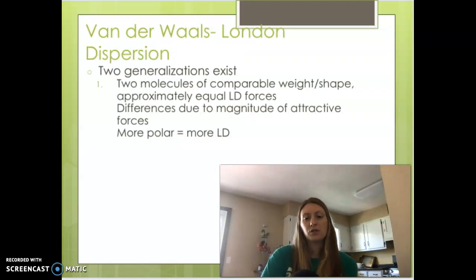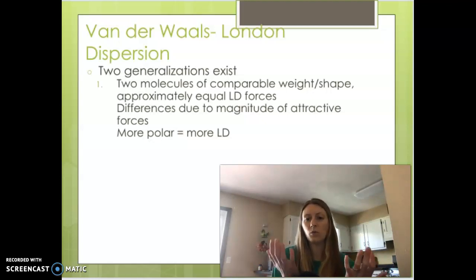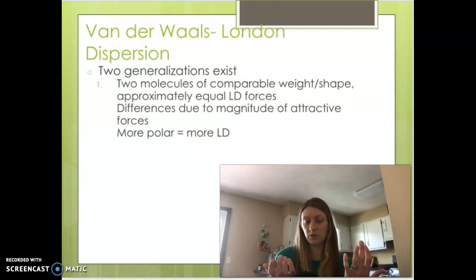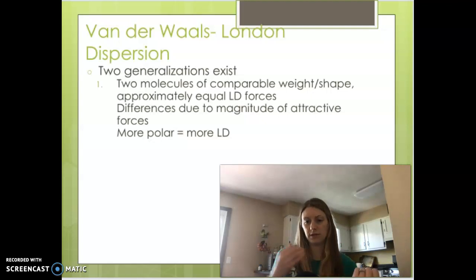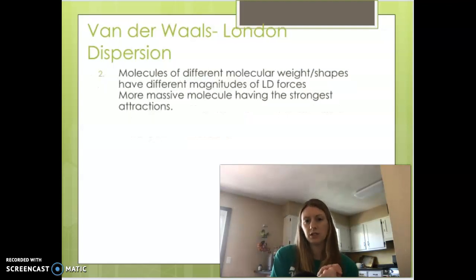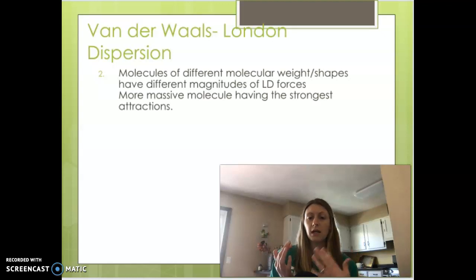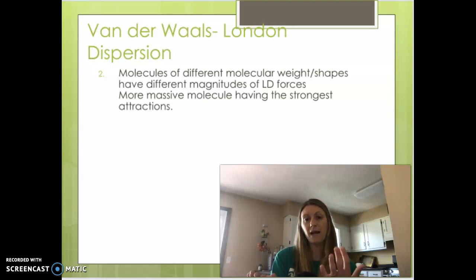When talking about London dispersion, there are two generalizations. First, if two molecules have equal weight and about the same shape, their London dispersion forces are going to be equal — any difference is usually due to polarity, so something more polar will have more. Second, if molecules have different molecular weights or shapes, their London dispersions will differ as well; the more massive the molecule, the stronger that attraction will be.